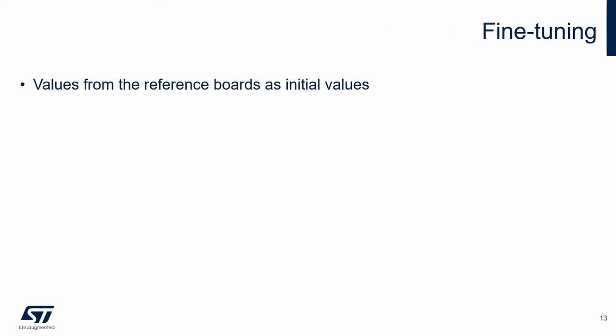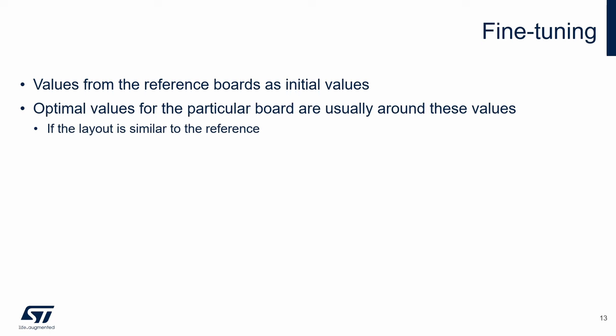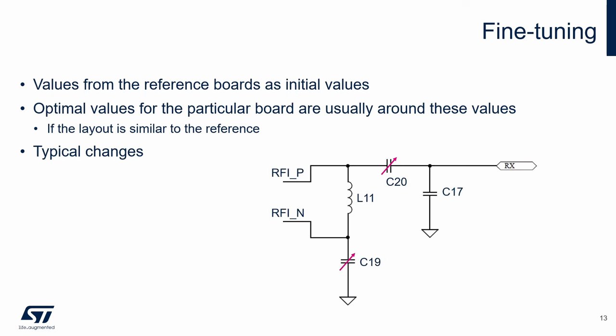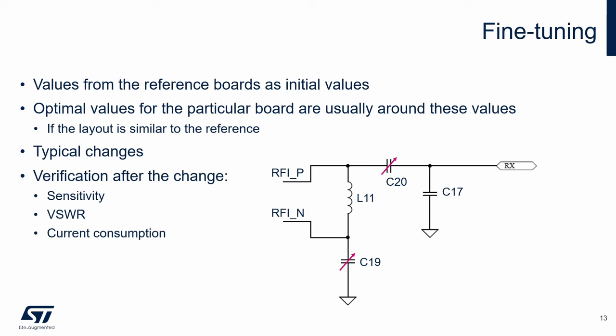The optimum values for a particular design may differ from the values used on the reference boards. In this case, the reference values can be considered as initial values which can be fine-tuned. Optimum values for the particular board are usually around these initial values, which is valid if the receiver part layout is similar to the reference. Typically, these two capacitors are slightly modified — one sets the matching, and the second sets the phase and amplitude of the differential signal. It is recommended to change only one value at a time to see the impact, as changing one capacitor may affect the other, and several steps may be needed. After each change, the impact must be verified; the most important metric is the sensitivity. The standing wave ratio may also help with tuning, showing where the matching is better or worse.